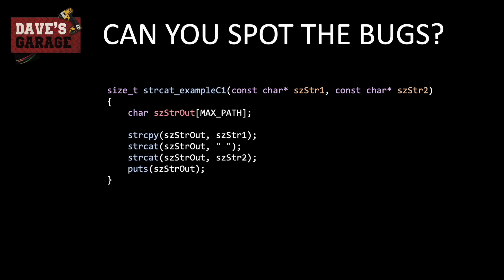The first problem is fairly obvious. There's absolutely no respecting the size of the output buffer that you're copying the strings into. So if szstr1 and szstr2 were more than 260 characters combined, along with the space, it would simply walk into memory, crash your system, and do horrible things.